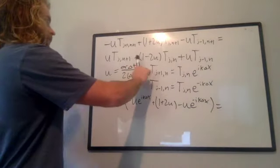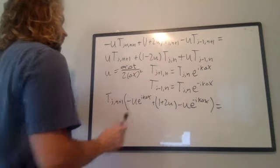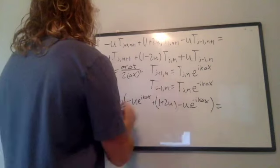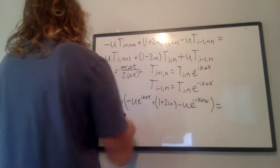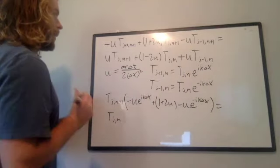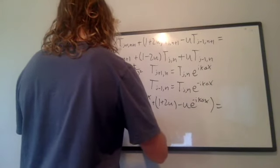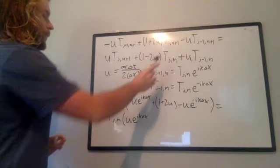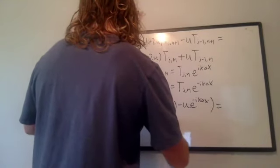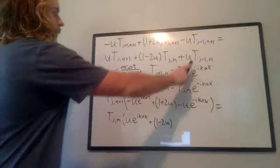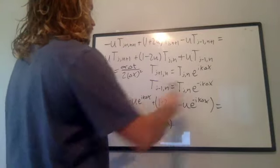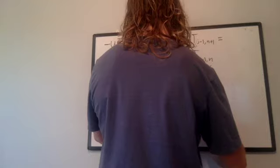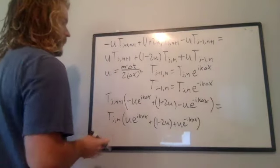Now we do the right side, getting everything in terms of T, J, N. We have a position forward from T, J, N, so we use the forward-step relation and factor out T, J, N. This gives T, J, N times the quantity (U·e^(iKΔx) + (1 - 2U) + U·e^(-iKΔx)). That is our right-side equation.